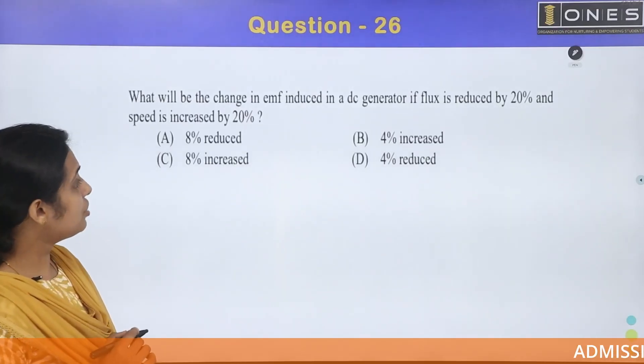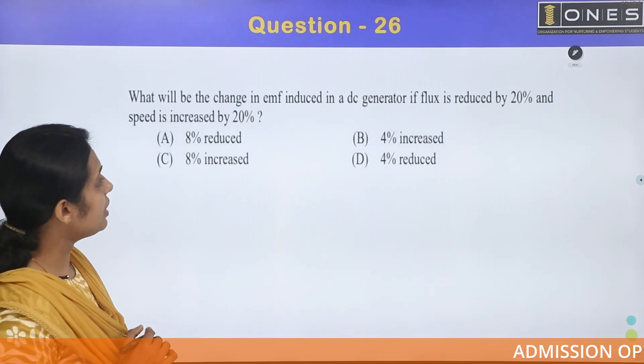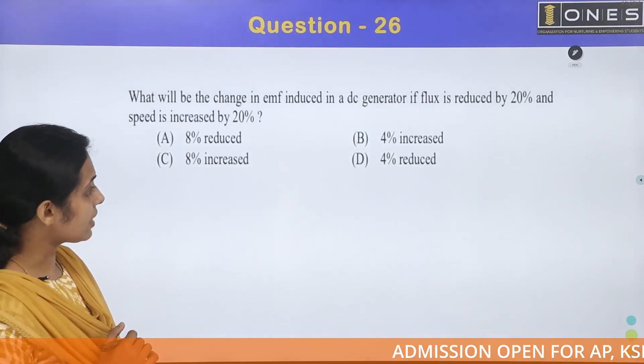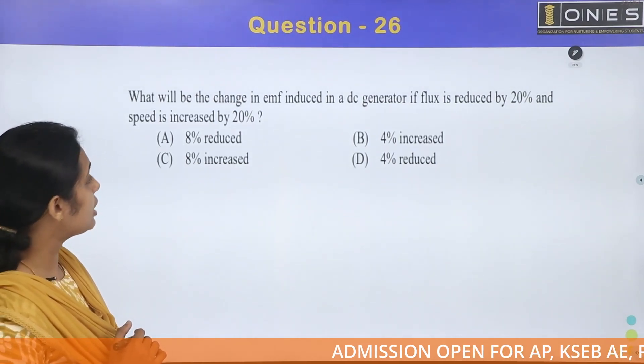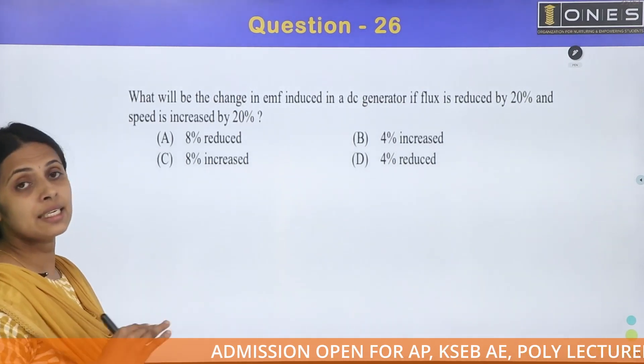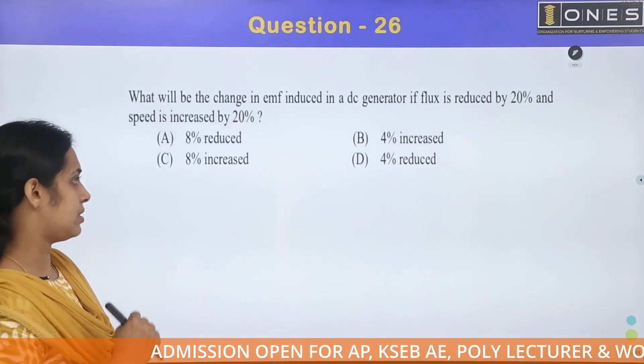What will be the change in EMF induced in a DC generator if flux is reduced by 20% and speed is increased by 20%?